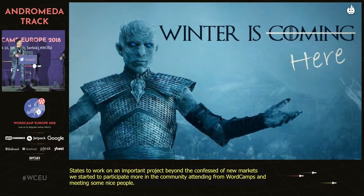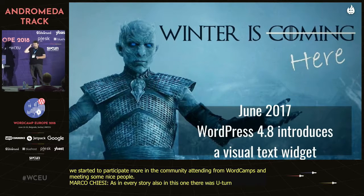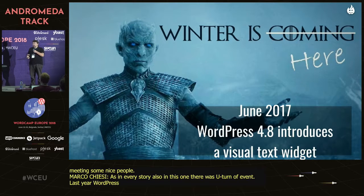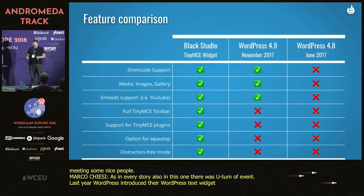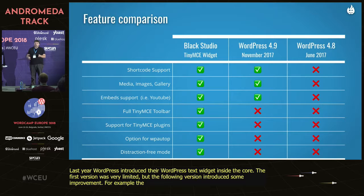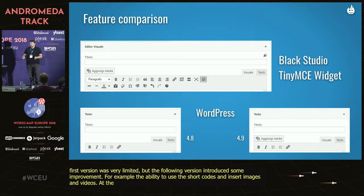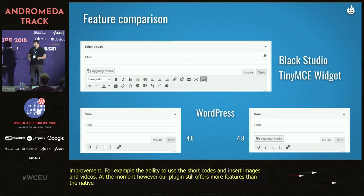But as in every story, there was a turn of events. Last year, WordPress introduced a text widget inside the core. The first version was very limited, but the following version introduced some improvements — for example, the ability to use shortcodes and insert images and videos. At the moment, however, our plugin still offers more features than the native one, as you can see in this slide.